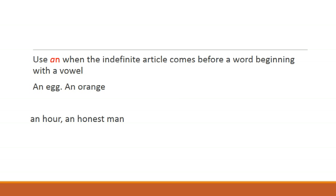And sometimes you have a lot of silent letters in English. For example, H-O-U-R is pronounced as 'hour.' The H in 'hour' is silent, so you have to say 'an hour.' Same way, 'honesty' or 'honest' — the H is silent in 'honest,' so you have to say 'an honest man' or 'an honest woman.'